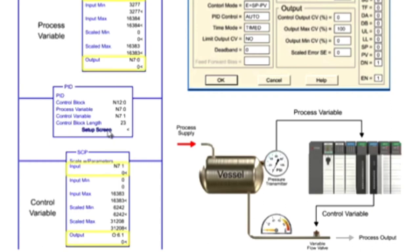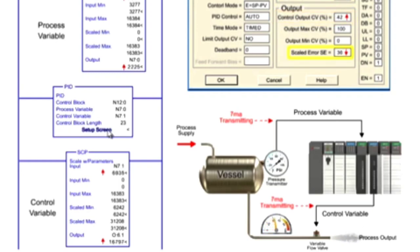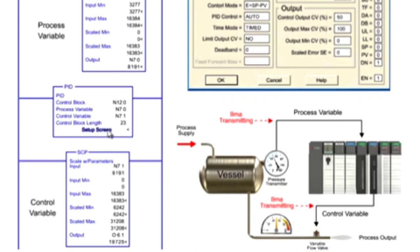As the PID instruction is executed, a scaled error is generated by subtracting the process variable from the setpoint. By increasing the control output, the error is reduced to attain the setpoint as the PSI is raised in the system. In other words, the valve position is gradually closed to reduce the pressure loss. Upon reaching the setpoint in the system, the control output and scaled error is reduced to 0.